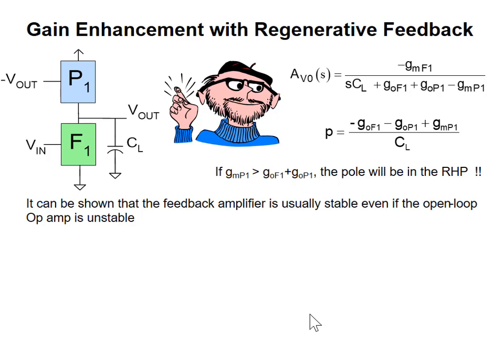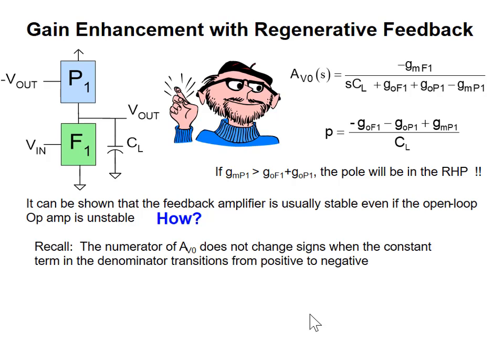We made a statement that it can be shown that the feedback amplifier is usually stable even if the open loop amp is unstable. So how do we show that? Recall the numerator A to zero does not change signs when the constant term in the denominator transitions from positive to negative.